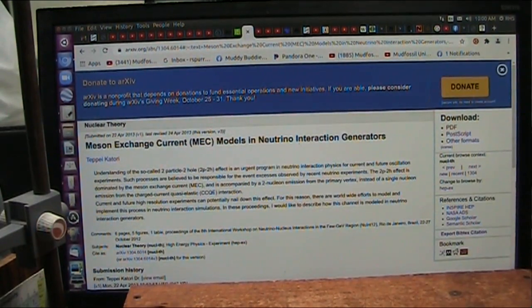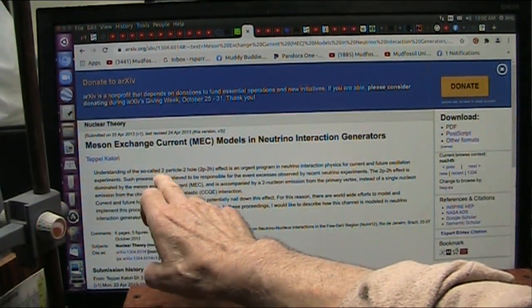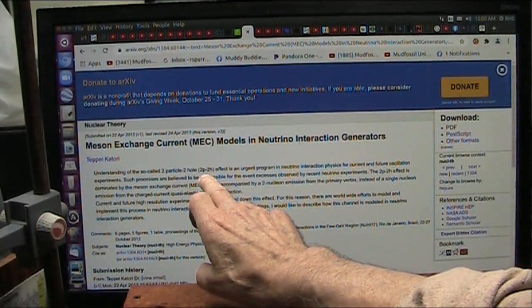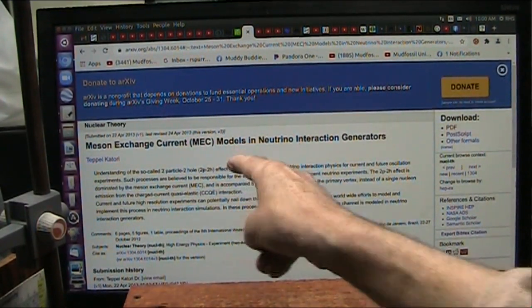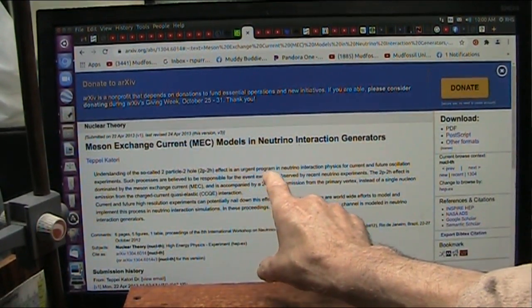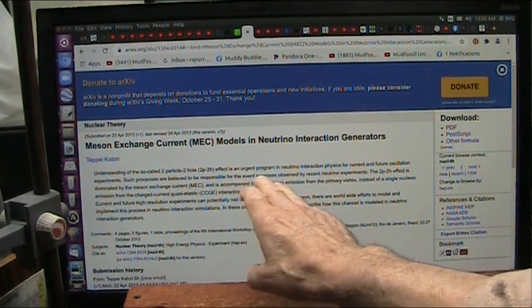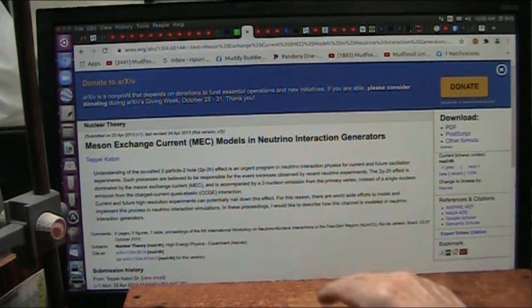Now, they realized they can get it. See, it's understanding of the so-called two-particle, two-hole, which is the 2PH, the two blacks, two whites, is an urgent program. They want to create an urgent program in neutrino interaction physics.